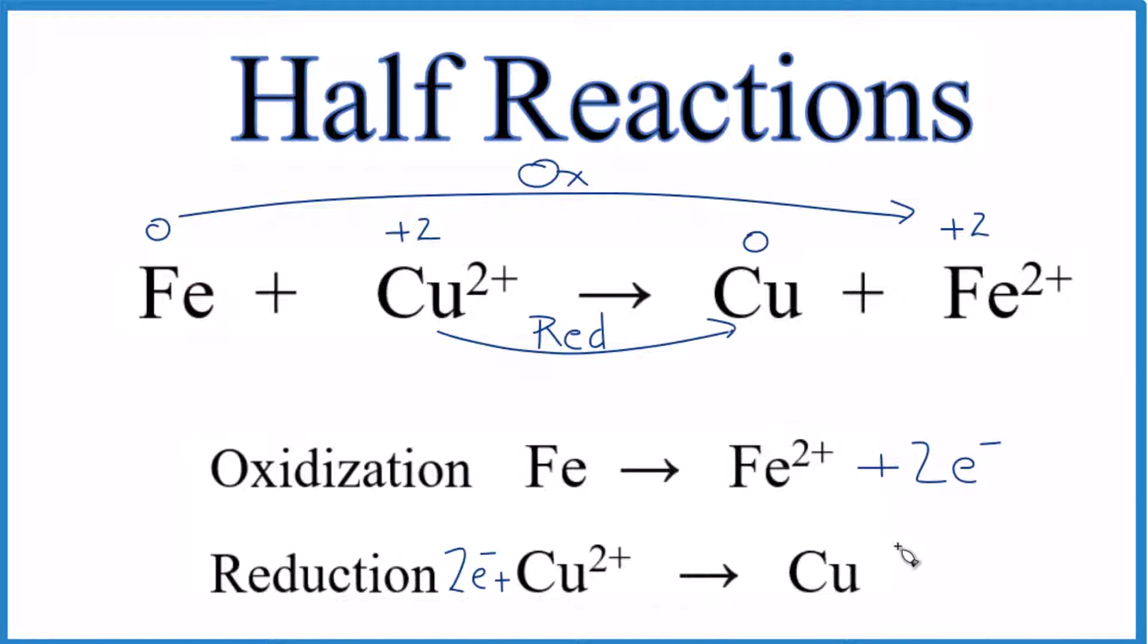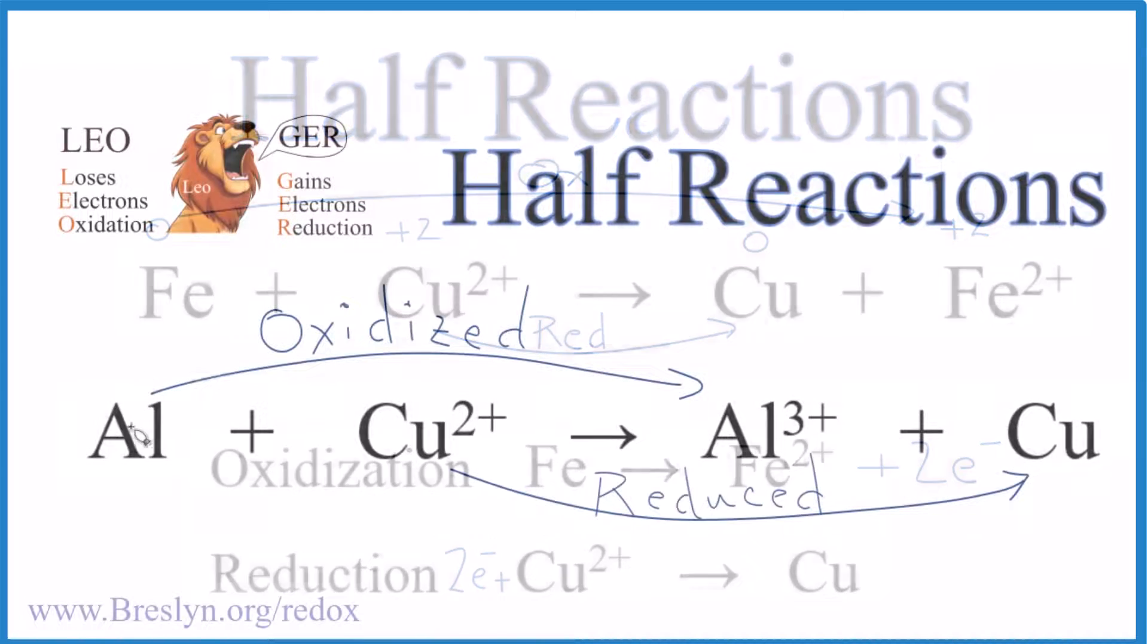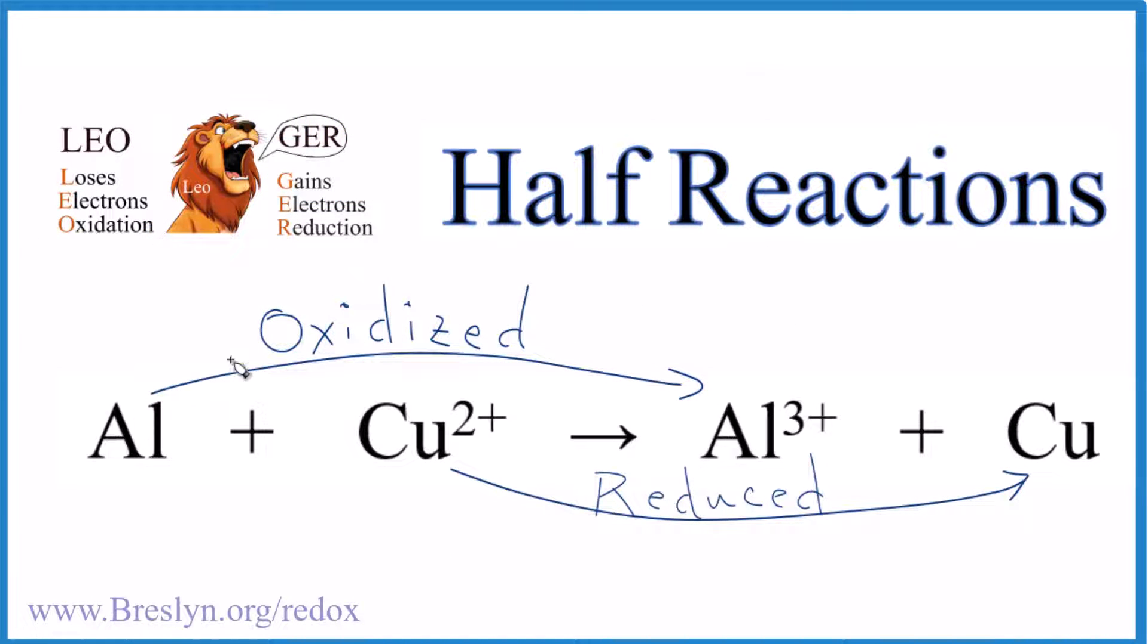Pause and write the half reactions for this one. So the aluminum was oxidized. The copper, it's reduced because we went from two plus to zero. That number got smaller, it's reduced.